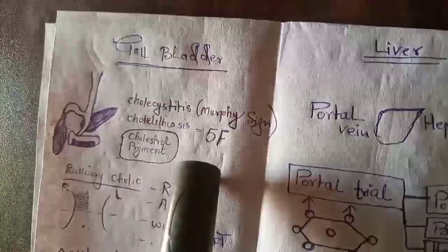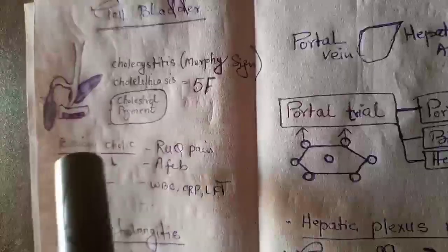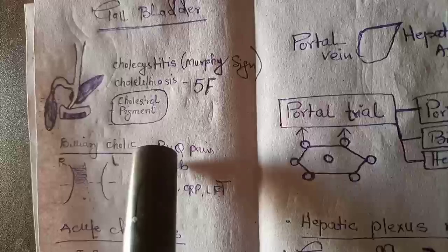The mnemonic for cholelithiasis is five F: female, fertile, fatty, 40, and fair. So this is the mnemonic 5F for cholelithiasis, the stone in the gallbladder.